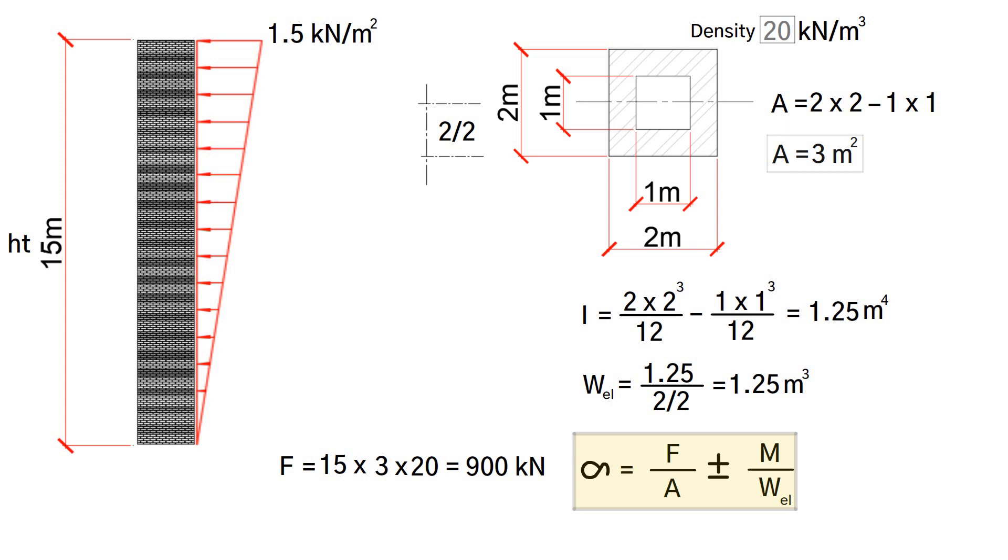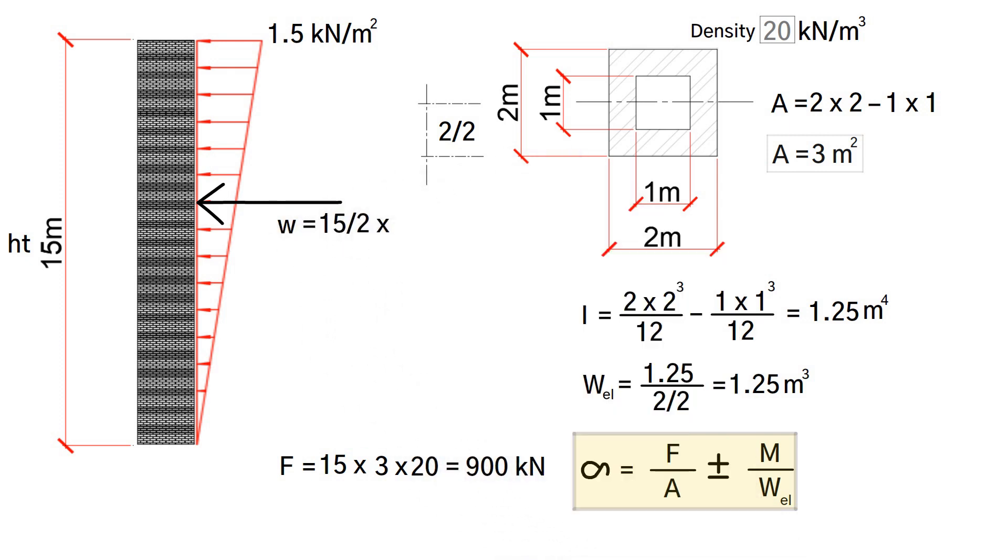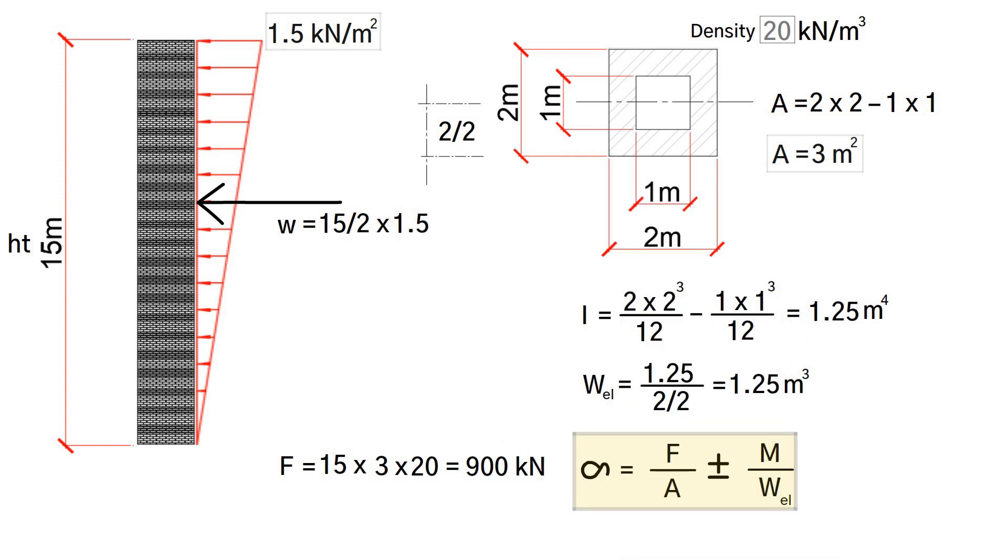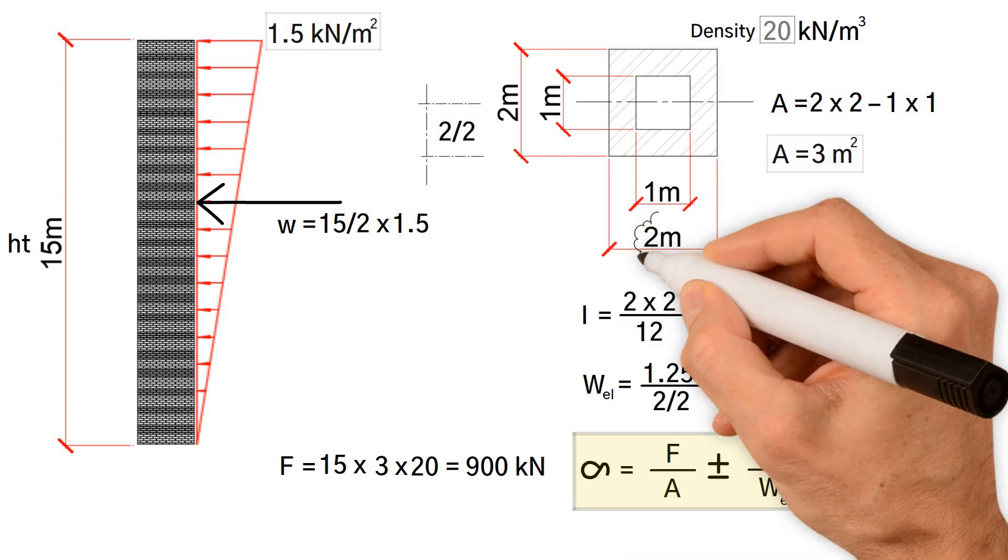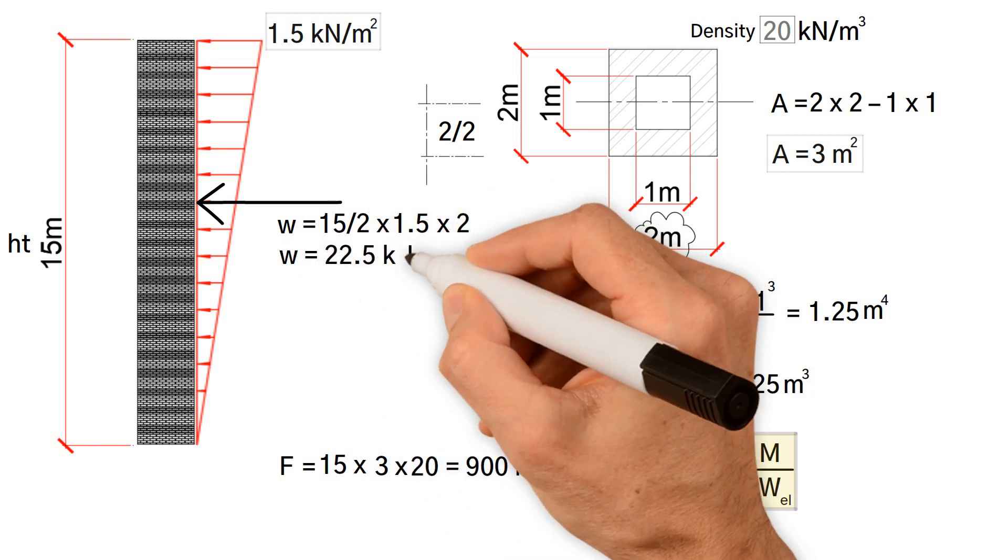Furthermore, we need to work out the overturning moment, which is the result of wind force. So, the total wind force equals half of the chimney height 15 meters times wind pressure 1.5 kilonewtons per meter squared, multiplied by the chimney width 2 meters, giving us a total of 22.5 kilonewtons.